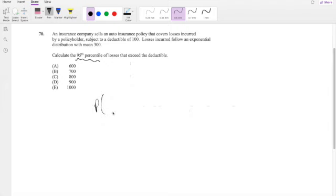So they're saying that given that it exceeds the deductible, which in our case is 100, what's the probability that X is greater than little x? That's equal to 0.95.